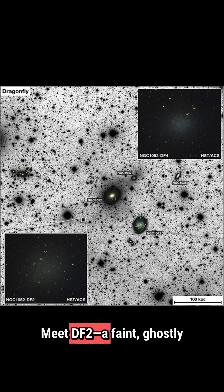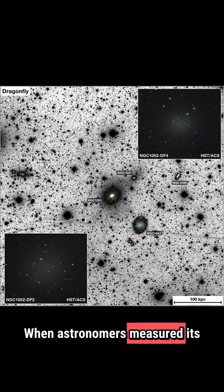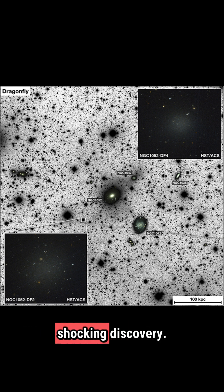Meet DF2, a faint, ghostly galaxy 65 million light-years away. When astronomers measured its stars, they made a shocking discovery.